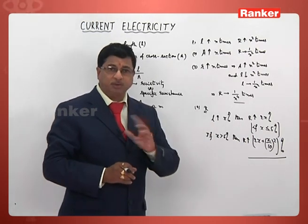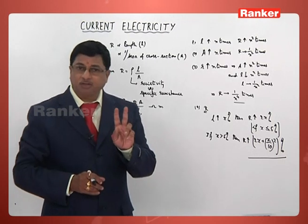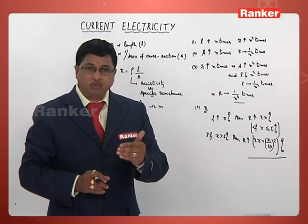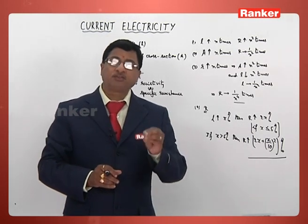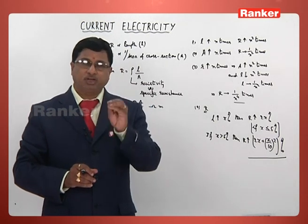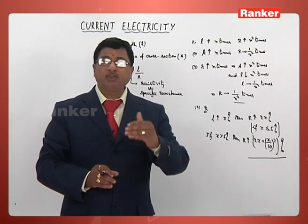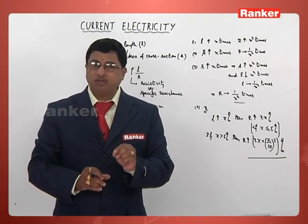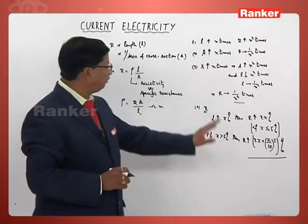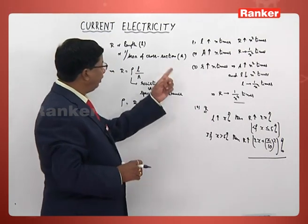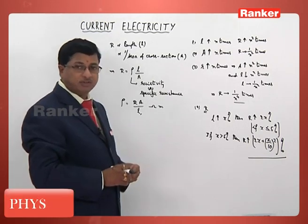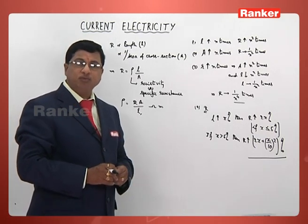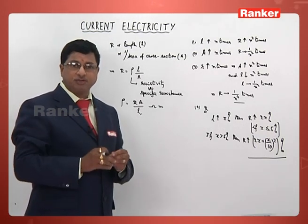To summarize: whenever length increases by x%, if x ≤ 5%, resistance simply rises by 2x%. If x > 5%, resistance rises by (2x + (x/10)²)%. These are important shortcuts to remember for variation of resistance with the stretching or compression of a conductor.